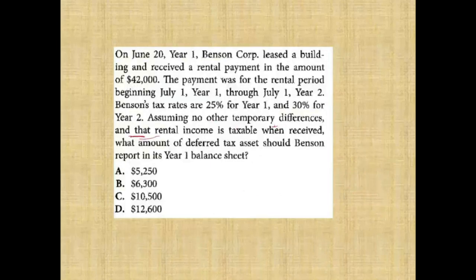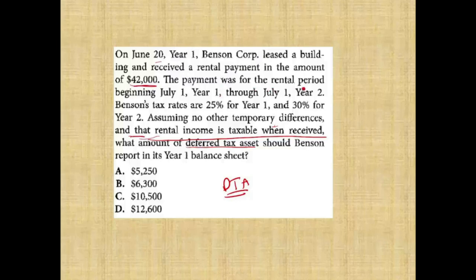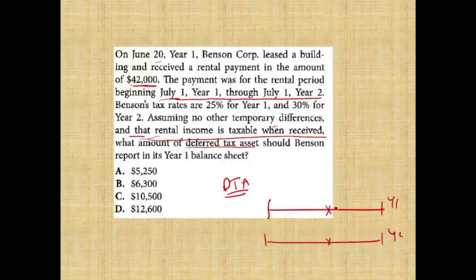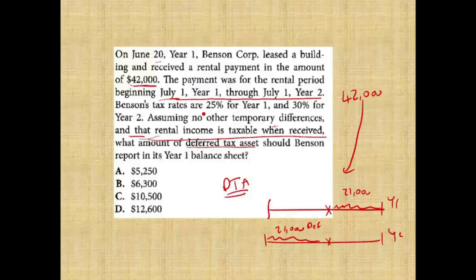Assuming no other temporary differences and rental income is taxable when received, what amount should Benson report as a deferred tax asset? On June 20 year one, Benson leased a building and received rental payments of $42,000 for the period July year one to July year two — half belongs to year one, half to year two. So $21,000 belongs to year one and $21,000 will be deferred. Benson's tax rates are 25% for year one and 30% for year two. The deferred tax asset: $21,000 times 30% equals $6,300.